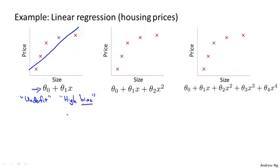Both of these roughly mean that it's just not even fitting the training data very well. The term bias is kind of a historical or technical one, but the idea is that if we're fitting a straight line to the data, it's as if the algorithm has a very strong preconception or a very strong bias that housing prices are going to vary linearly with their size. Despite the data to the contrary, despite the evidence to the contrary, its preconceptions or bias still causes it to fit a straight line, and this ends up being a poor fit to the data.